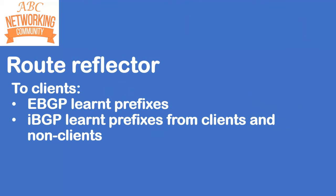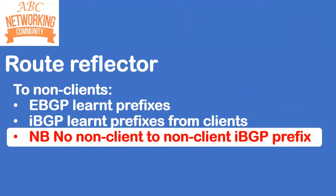The route reflector breaks those iBGP rules for propagation of prefixes. It will advertise iBGP learned prefixes from clients and non-clients — that's the special rule for route reflectors. It will reflect iBGP learned prefixes. However, no non-client to non-client iBGP prefixes are reflected. That's important to remember.